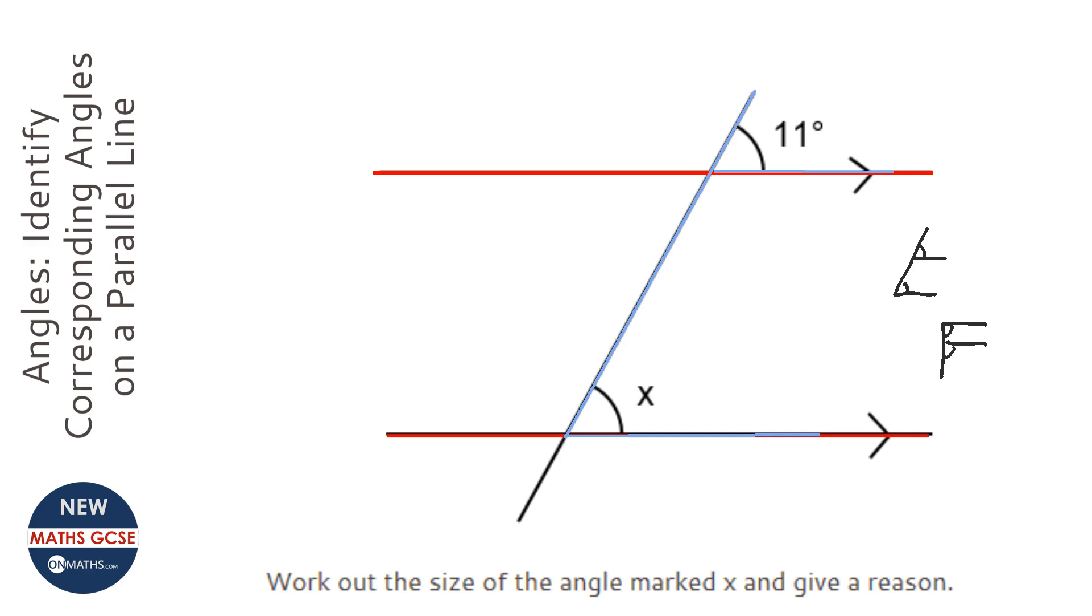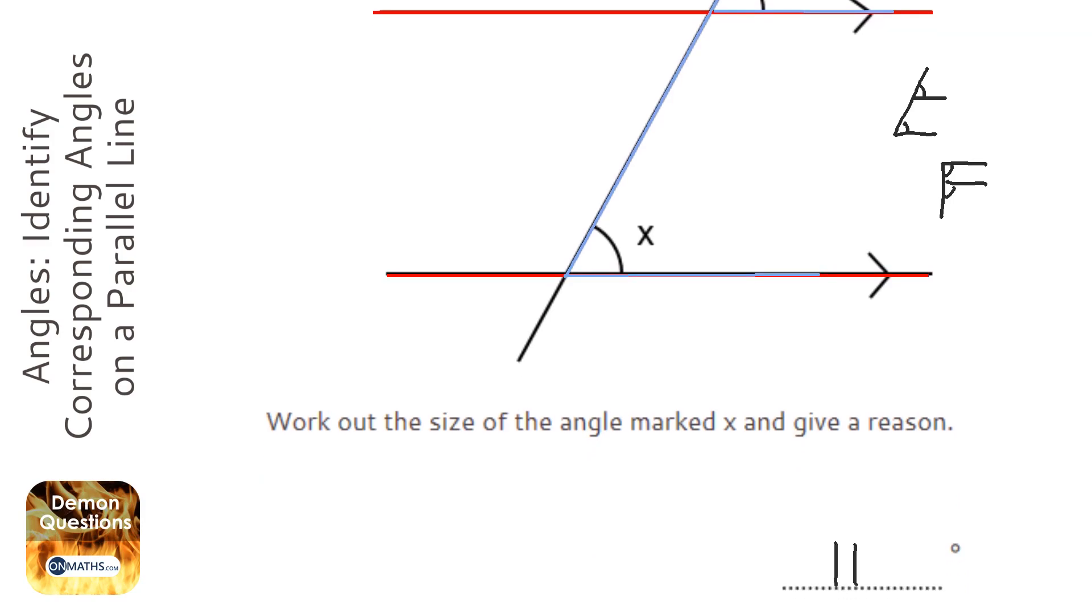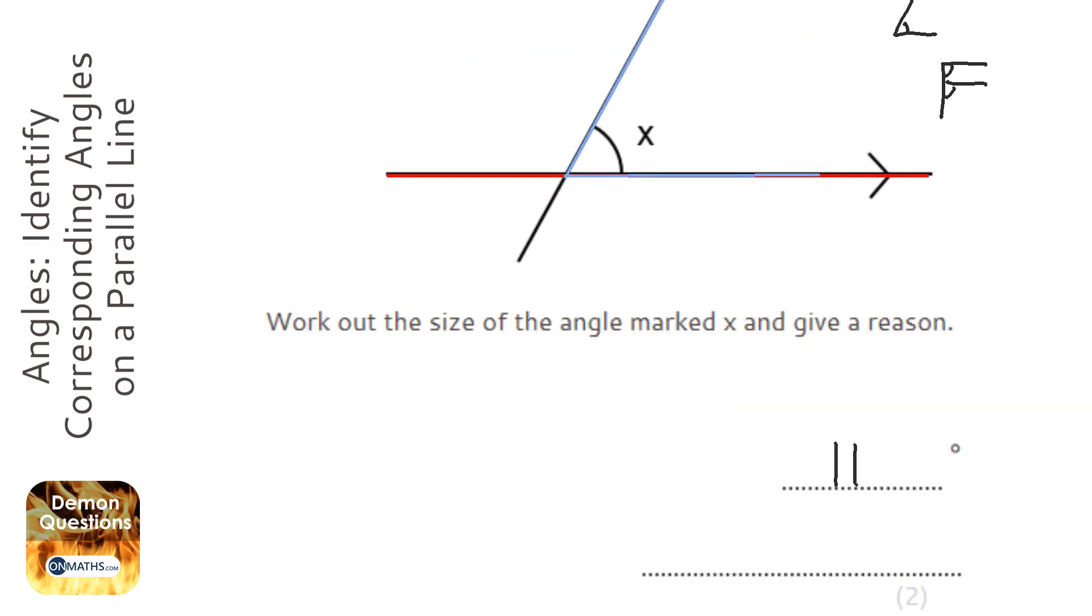And the F shows that the two are going to be equal, so it's going to be 11 degrees. And it shows that they are, how I remember it, corefponding.